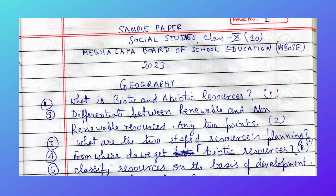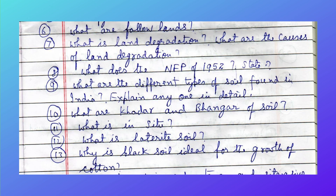Classify resources on the basis of development. What are the fallow lands? What is land degradation and what are the causes of land degradation? What does the NEP of 1952 state? What are the different types of soil found in India — explain any one in detail.